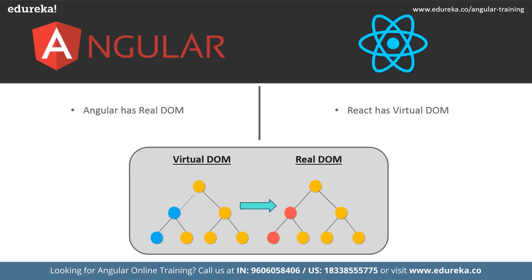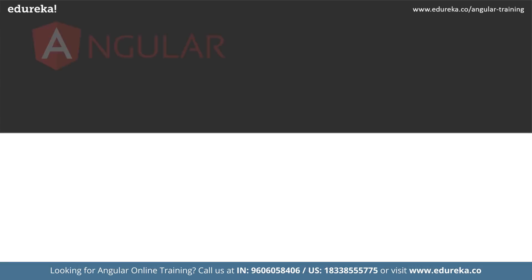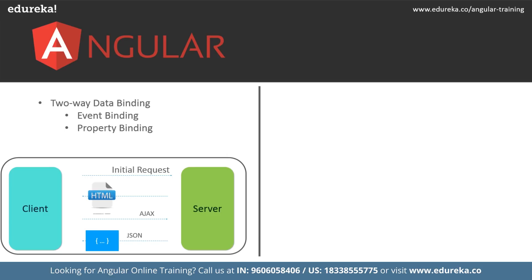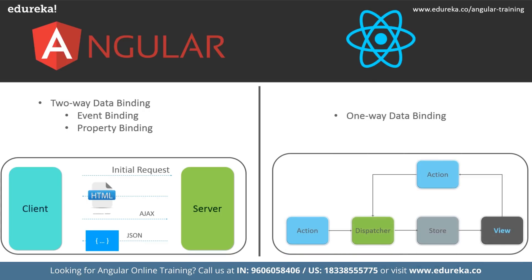Angular uses two-way data binding, event binding, and property binding. Event binding allows Angular to bind events along with methods. Property binding allows passing data from the component class and setting values at the user end, including controlling element properties. Two-way data binding allows changes from views to models and models to views. React, unlike Angular, uses one-way data binding — UI elements can only be changed by updating the model state. This single-direction data flow gives better control, making applications more flexible and efficient.